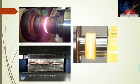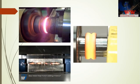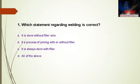Now it's time for some questions to check your understanding. Question 1: Which statement regarding welding is correct? A — it is done without filler wire; B — it is a process of joining with or without filler; C — it is always done with filler; D — all of the above. The right answer is B: it is a process of joining with or without filler.